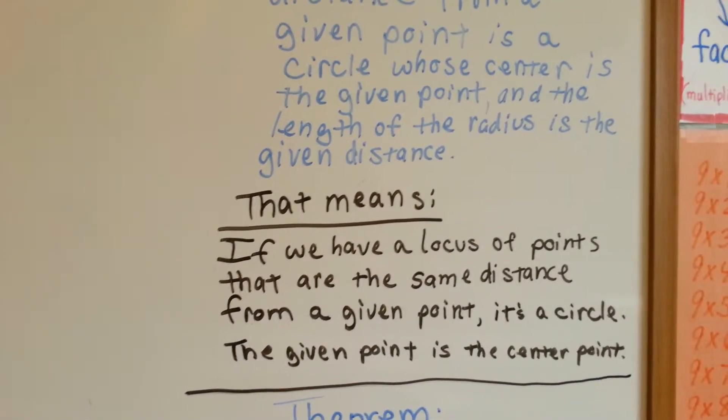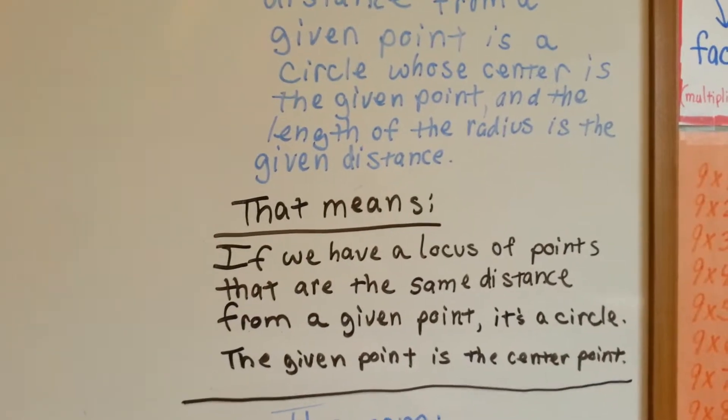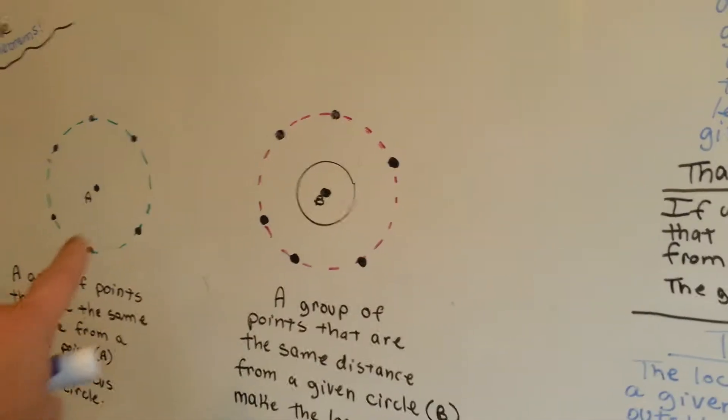If we have a locus of points that are the same distance from a given point, it's a circle. The given point is the center point. It's that guy. Alright? Next one.